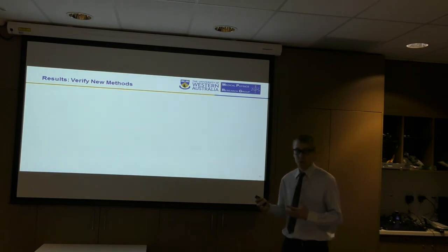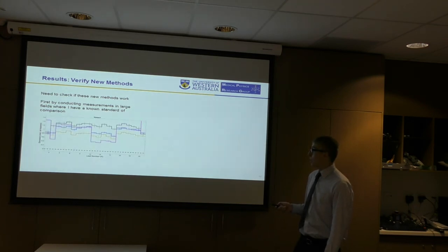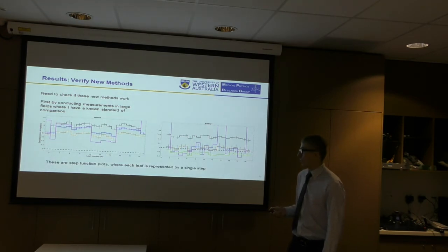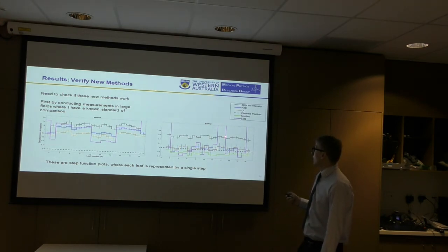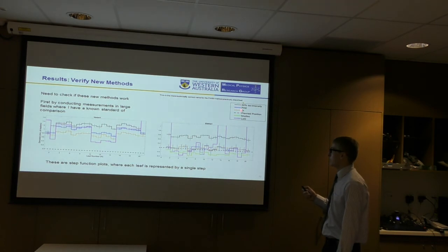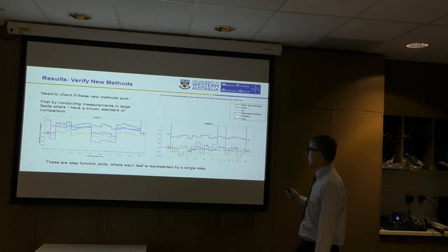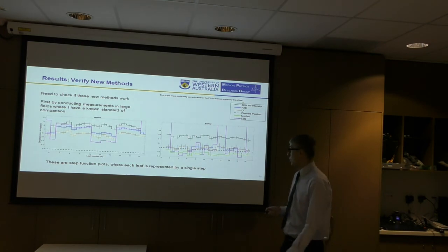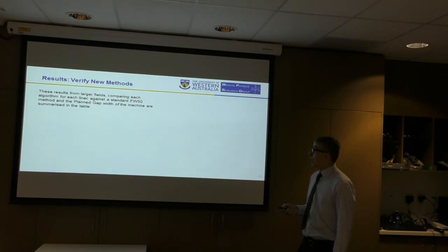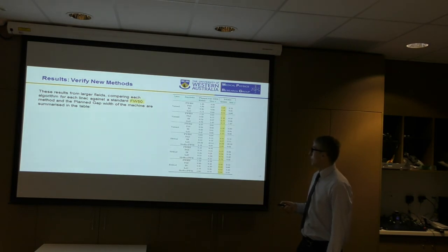Okay, so we have these new algorithms. We want to see if they work. So, the idea was to verify them using large field sizes where we know what the answer is. We can test them against other methods. So, here I've shown some step plots where each step equates to a single leaf, and the color scheme used for the algorithms. This is the full width 50. This is the partial area effect. This is derivative interpolation. The plan position is indicated by the dash. Modified isointensity is green, and the Laplacian of Gaussian, which indicates a lot of noise variation, is in purple. And I try and keep the colors consistent. So, hopefully that worked out. So, I've summarized the results here. So, it's a comparison against the full width 50 for each LINAC and each method. And I've also included a comparison against the gap width.